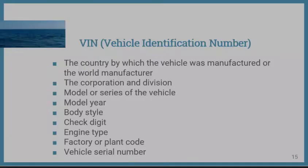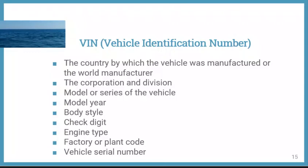The Vehicle Identification Number (VIN) is needed to identify the exact type of vehicle being worked on. It is also used for title and registration purposes, and is normally stamped on a metal tab fastened to the instrument panel near the windshield. Each manufacturer assigns a VIN to each vehicle produced. Information that can be determined from the VIN includes: country of manufacture, corporation and division, model or series, model year, body style, check digit, engine type, factory or plant code, and vehicle serial number.